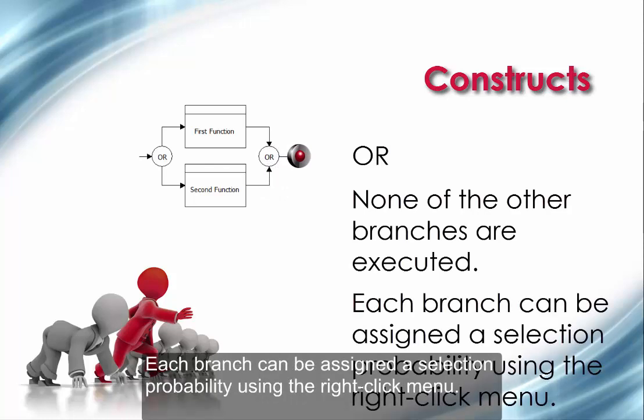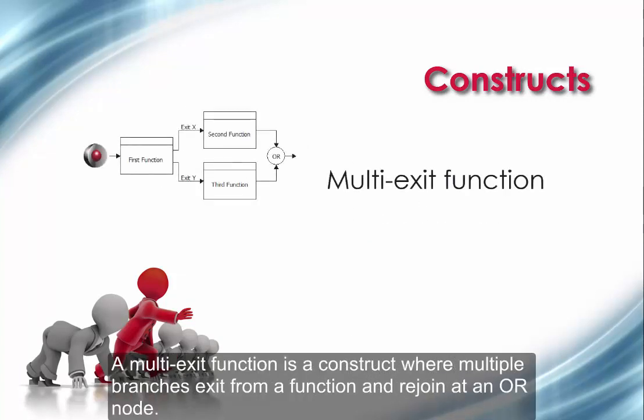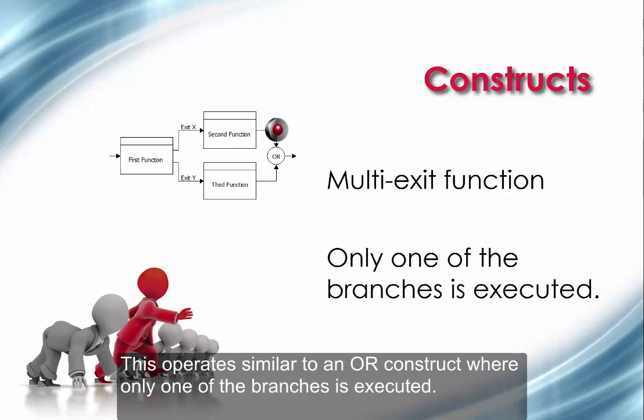Each branch can be assigned a selection probability using the right-click menu. A multi-exit function is a construct where multiple branches exit from a function and rejoin at an OR node. This operates similar to an OR construct, where only one of the branches is executed.